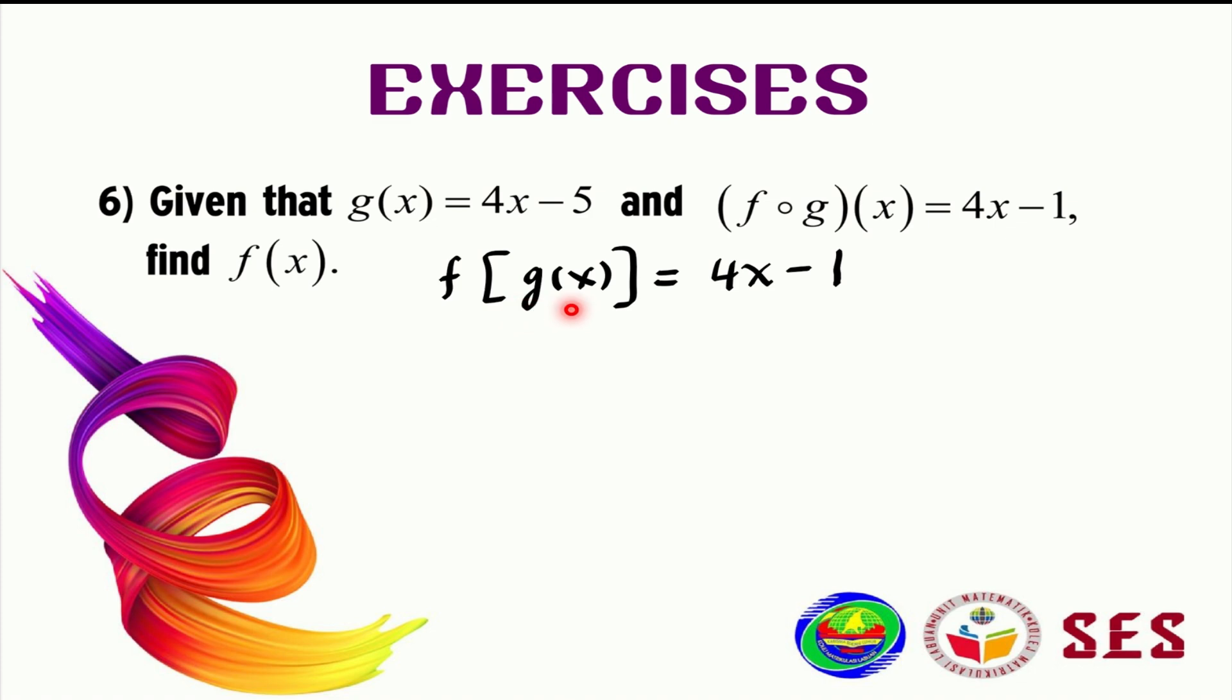This g(x) here is the input for the function f, which means we can replace this g(x) with 4x minus 5. So let us write it here: f(4x minus 5) equals 4x minus 1.